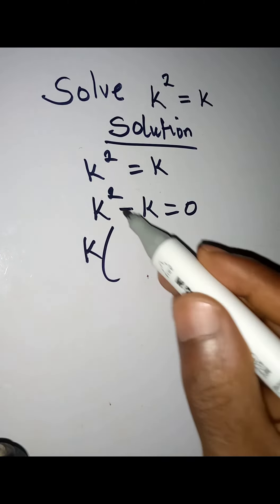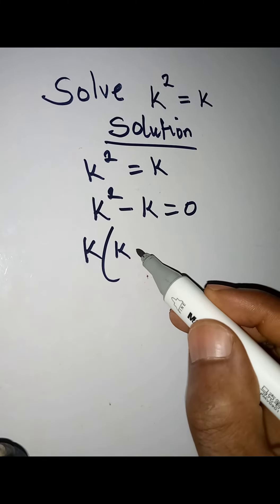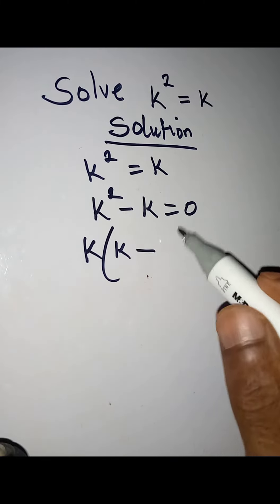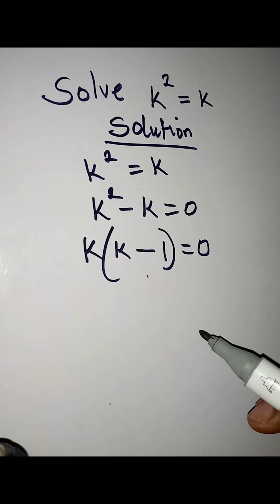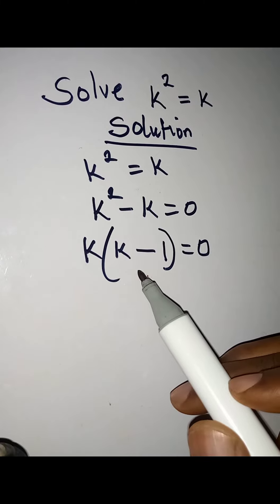If k comes out, we will have k in there. Minus k into k will give us 1. Close the bracket, and everything equals zero: k(k - 1) = 0. If you want to be sure of this step, you can verify it.